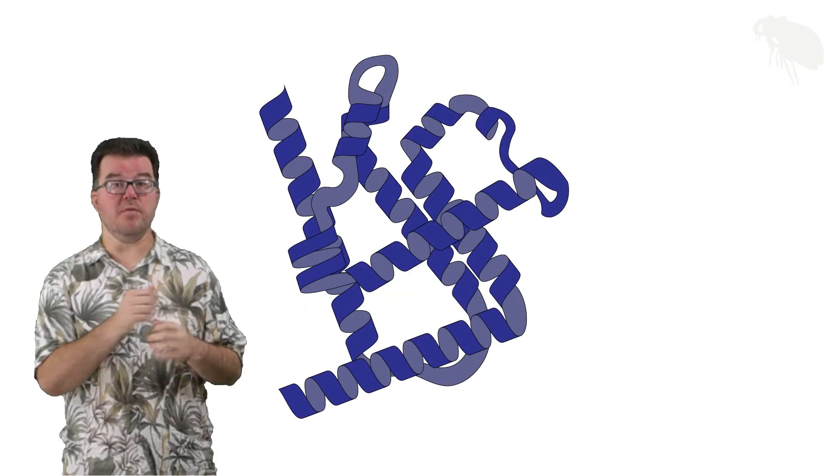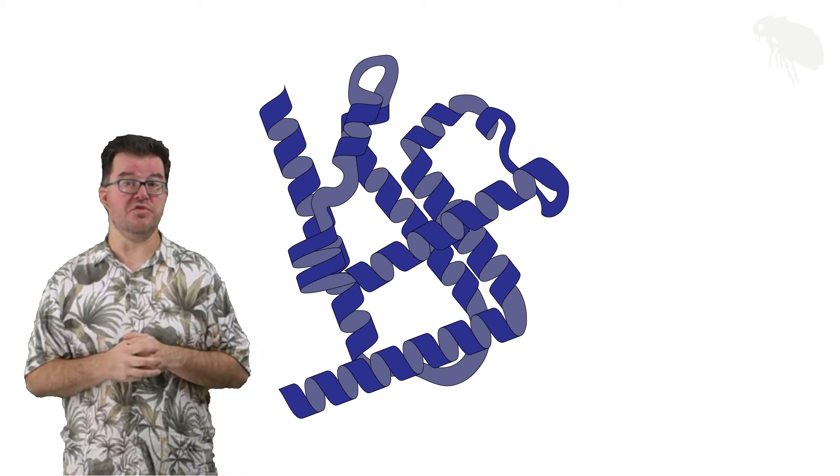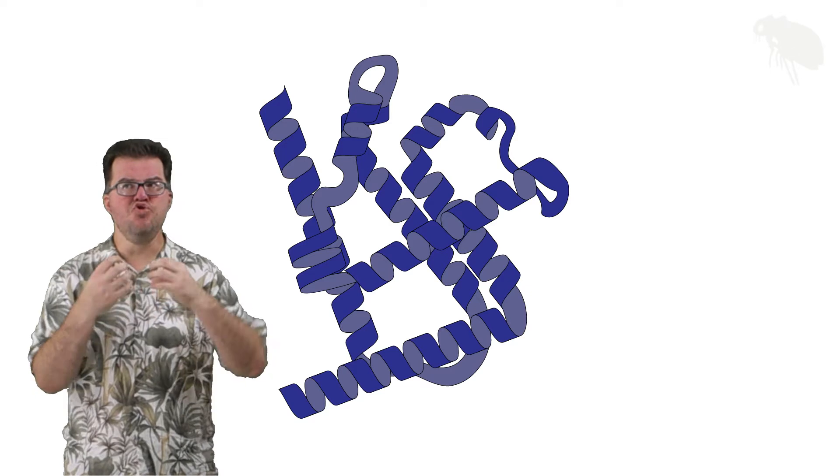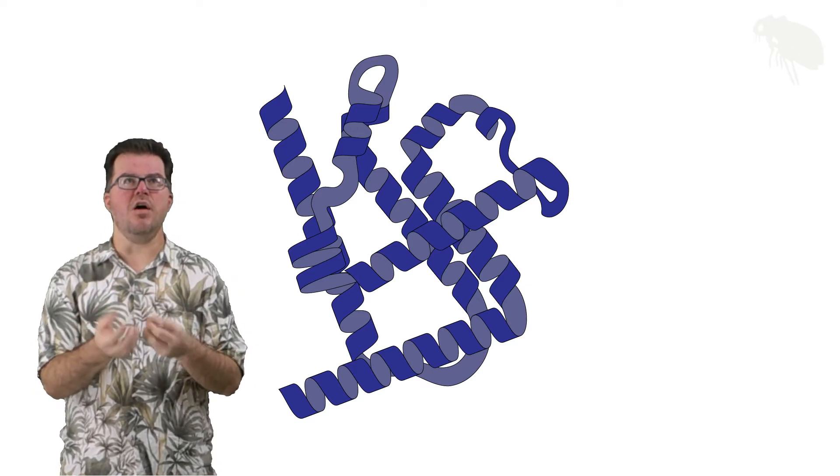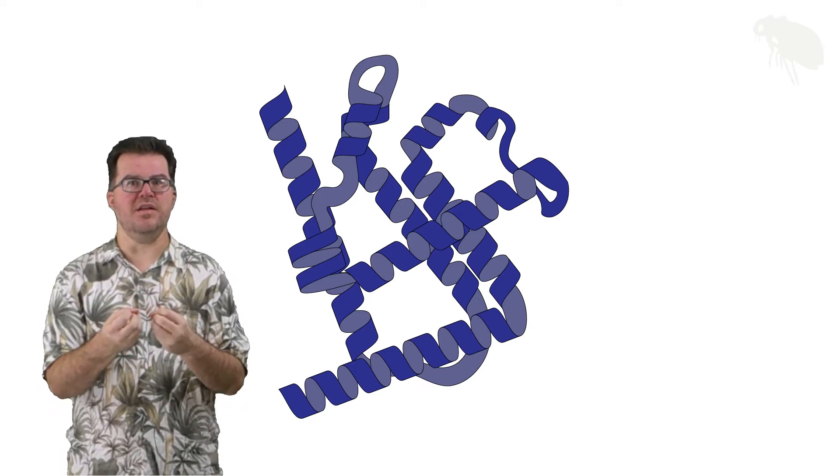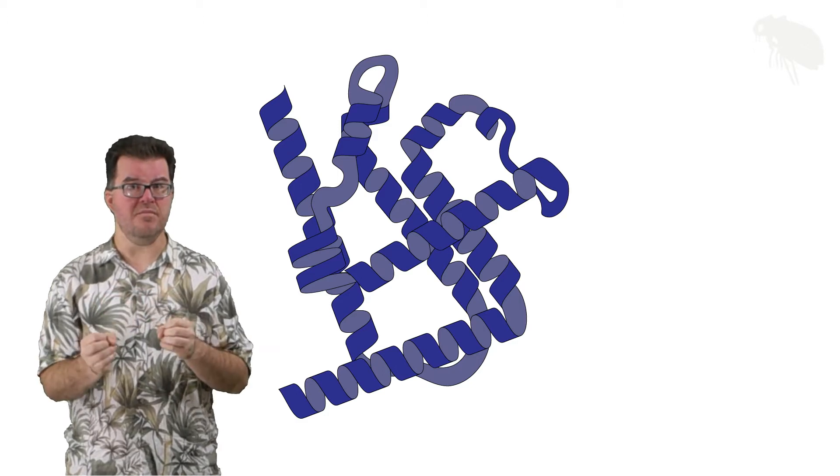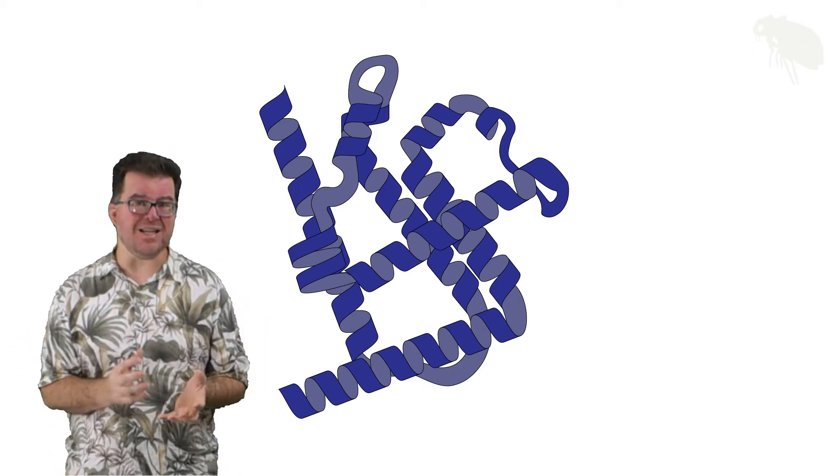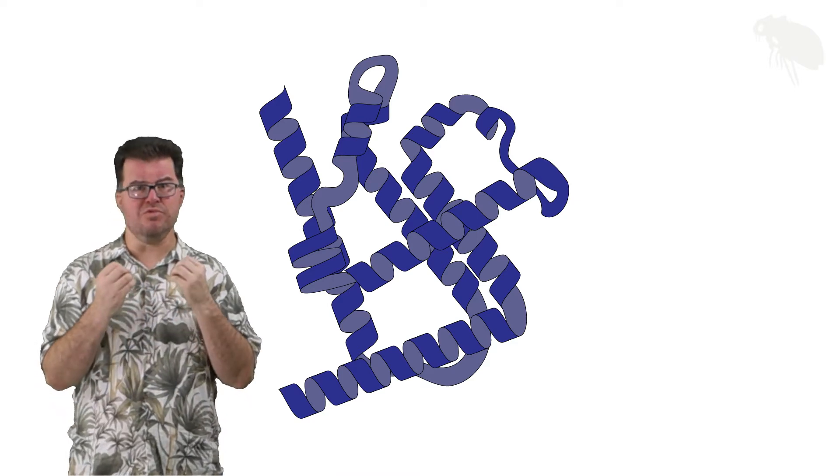You may recognize this molecule from my tertiary structure video. This is my attempt at rendering beta hemoglobin. As good as the ribbon models are, and as easy on the eyes as they are relative to if we showed every single atom, when we start to look at cellular functions and try to diagram out processes, they're still too much.